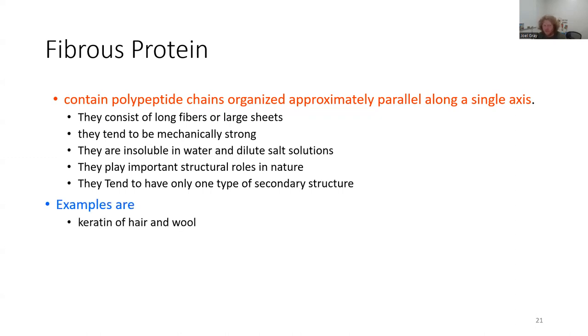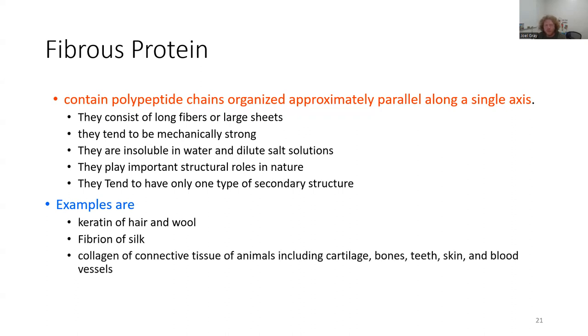Examples would be keratin of hair and wool, or fibroin of silk, and collagen of connective tissues of animals including cartilage, bones, teeth, skin, and blood vessels.